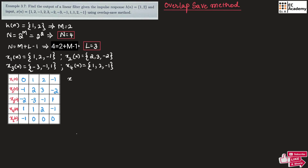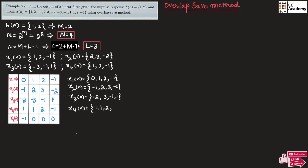So we obtain: x1(n) = {0, 1, 2, -1}, x2(n) = {-1, 2, 3, -2}, x3(n) = {-2, -3, -1, 1}, x4(n) = {1, 1, 2, -1}, and x5(n) = {-1, 0, 0, 0}. The length of each sequence depends on N, which equals 4, so each sequence has 4 values.